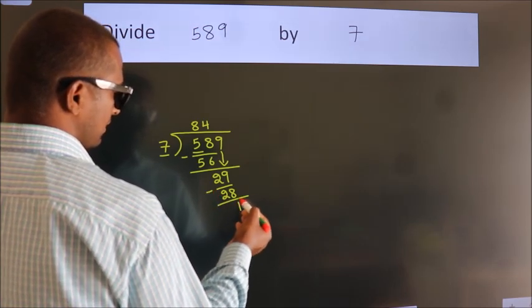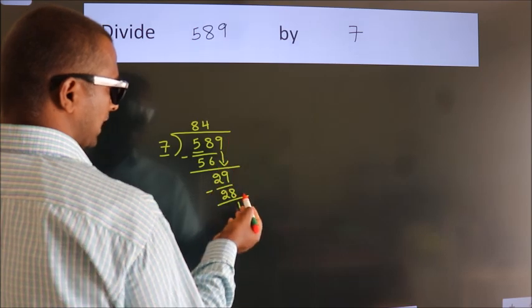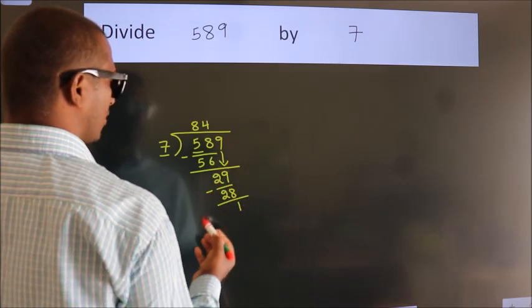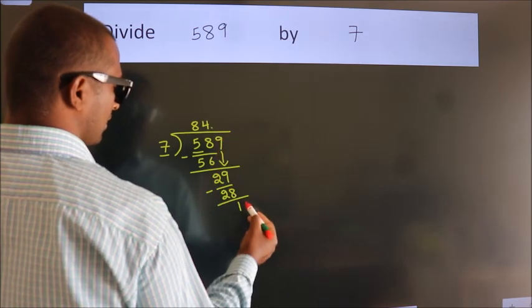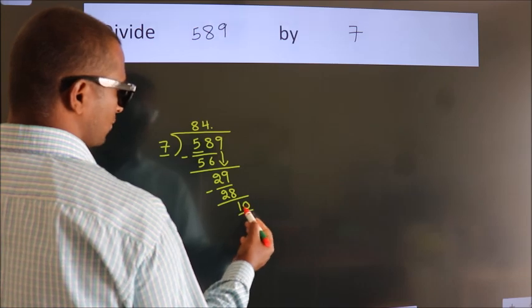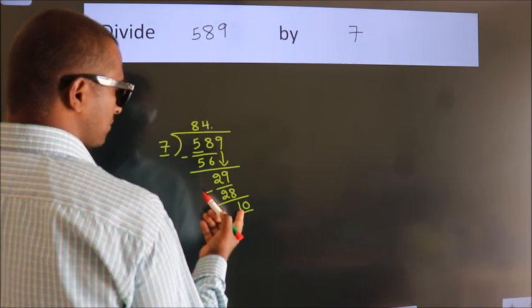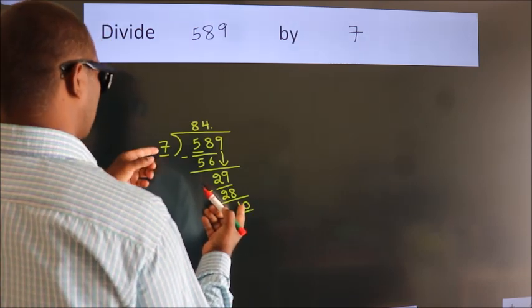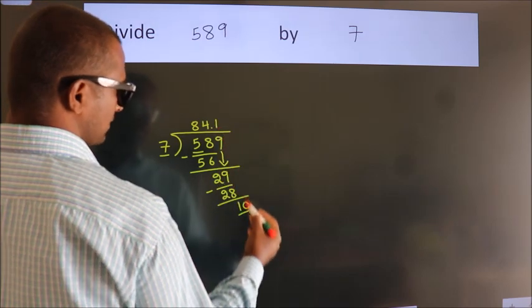After this, there are no more numbers to bring down. So what we do is put a decimal point and take 0. So we have 10. A number close to 10 in the 7 table is 7 times 1, which is 7.